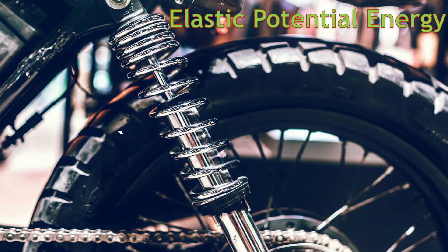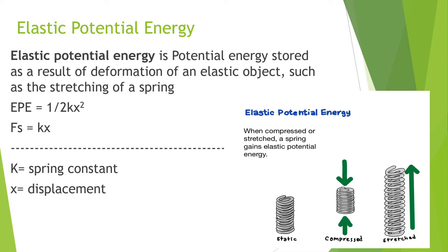Welcome back everybody to Work in Energy. Today we're going to be talking about elastic potential energy, along with kinetic and potential energy. Elastic potential energy is potential energy stored as a result of deformation of an elastic object, such as the stretching or compressing of a spring. The formula is: elastic potential energy equals one-half kx squared. The force of a spring equals kx. The elastic potential energy depends on how much the spring is compressed or stretched.